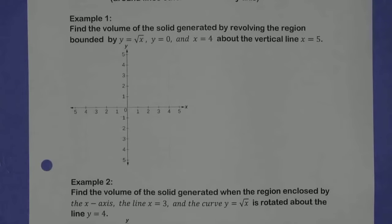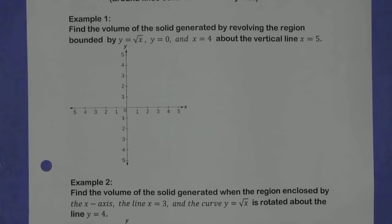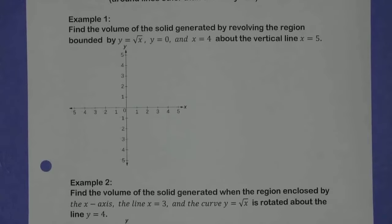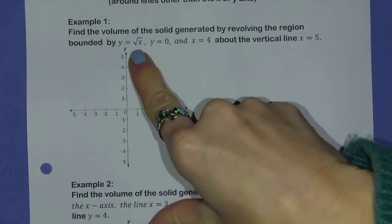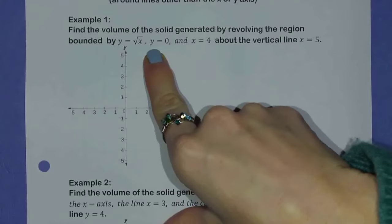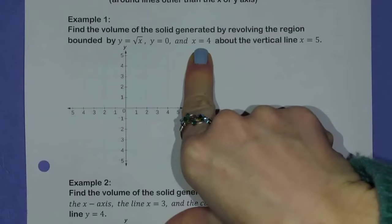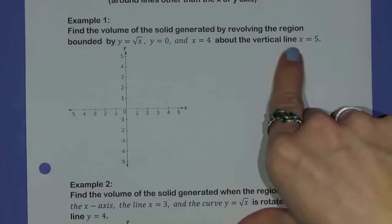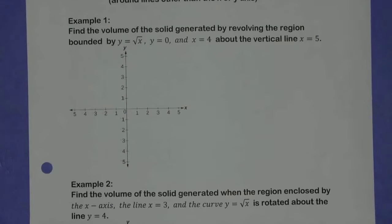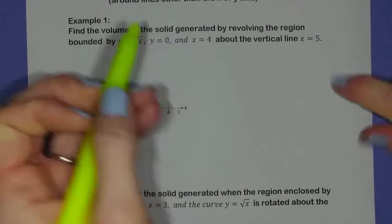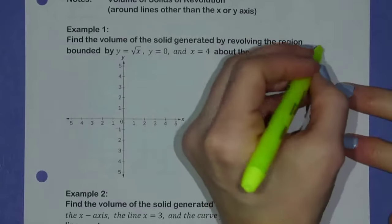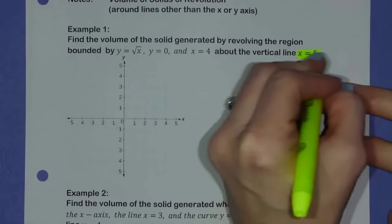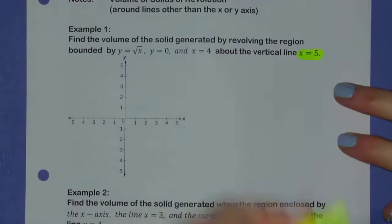Find the volume of the solid generated by revolving the region bounded by y equals root x, y equals zero, and x equals four about the vertical line x equals five. This is the new part — everything else should look very familiar. We'll deal with that in a second.